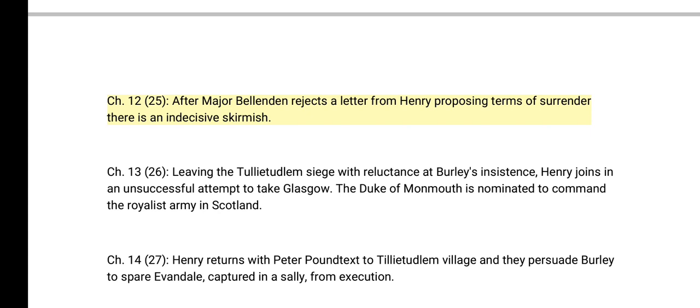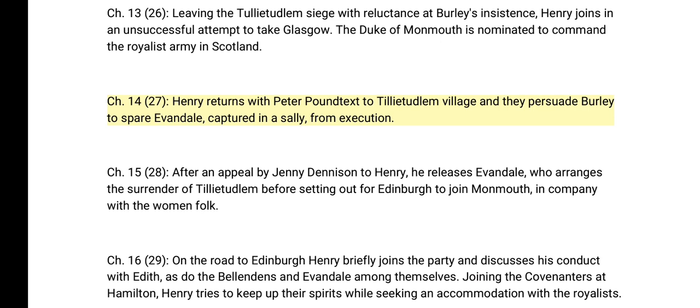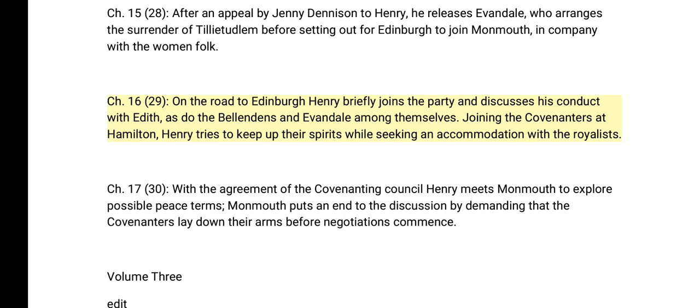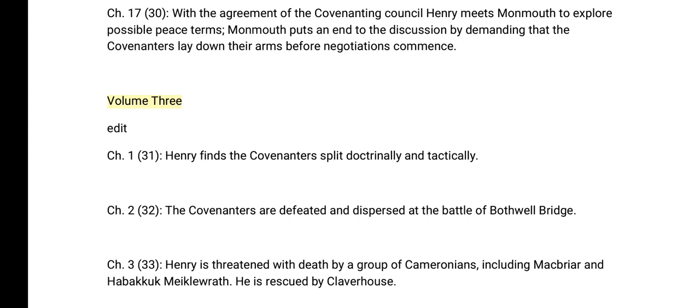Ch. 27: Henry returns with Peter Poundtext to Tillietudlem village and they persuade Burley to spare Evandale, captured in a sally, from execution. Ch. 28: After an appeal by Jenny Denison, Henry releases Evandale, who arranges the surrender of Tillietudlem before setting out for Edinburgh to join Monmouth, in company with the women folk. Ch. 29: On the road to Edinburgh, Henry briefly joins the party and discusses his conduct with Edith; the Bellendons and Evandale discuss among themselves. Joining the Covenanters at Hamilton, Henry tries to keep up their spirits while seeking an accommodation with the royalists. Ch. 30: With the agreement of the covenanting council, Henry meets Monmouth to explore possible peace terms; Monmouth puts an end to the discussion by demanding that the Covenanters lay down their arms before negotiations commence.